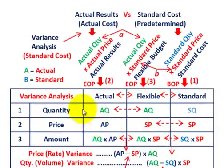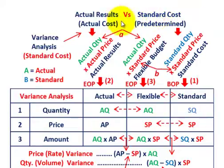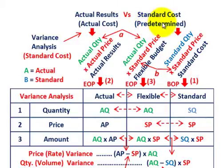Let's look at the general model we'd be using here for standard costing — again, remember it's a variance analysis. This is where we're comparing our actual results versus some standard costs that we set up for our product. The actual results are the actual cost; the standard cost is that predetermined amount for our materials, our labor, and our overhead. For variance analysis you're really looking at three different amounts — you could call them budgets.